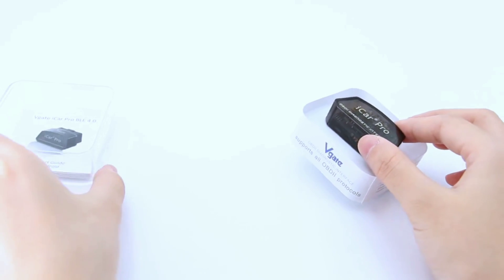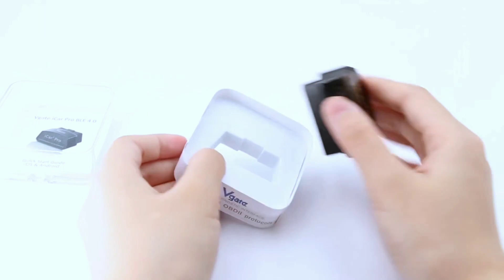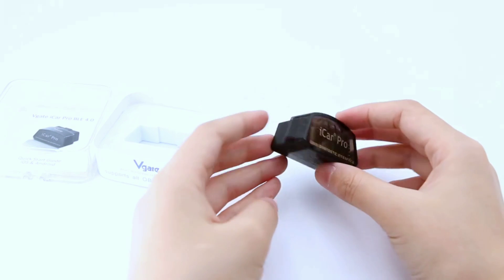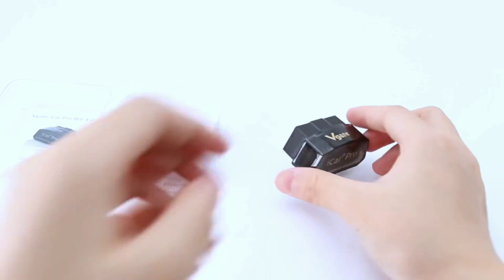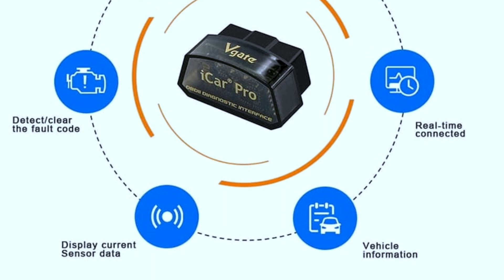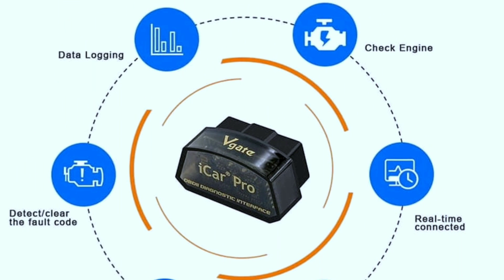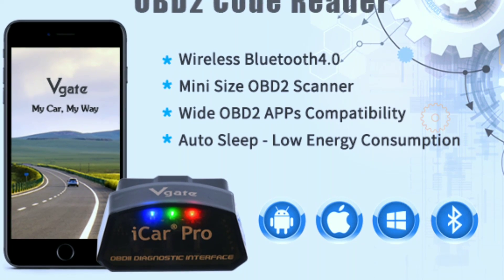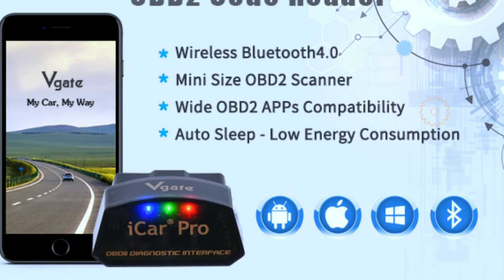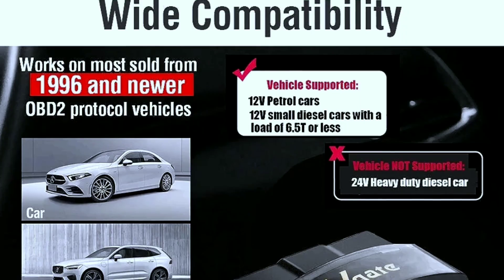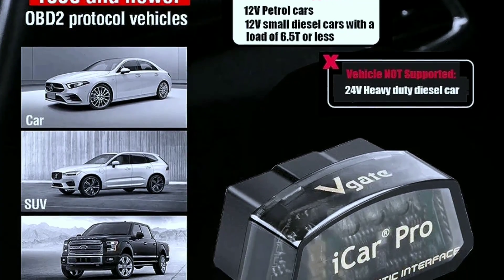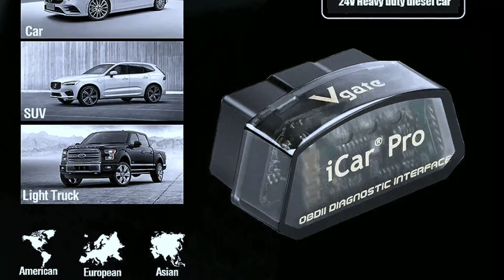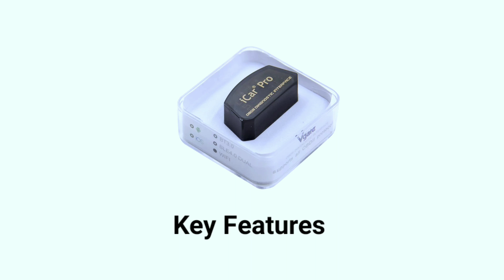The Vagate eCar Pro Bluetooth 4.0 is a compact, user-friendly OBD-II diagnostic tool that allows you to access real-time data from your car's onboard computer. This device is compatible with both Android and iOS devices and can be used with a wide range of car models that support OBD-II protocols. Now let's talk about some of the key features that make the Vagate eCar Pro Bluetooth 4.0 a valuable addition to your automotive toolkit.